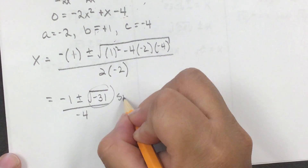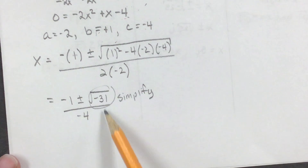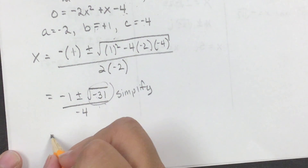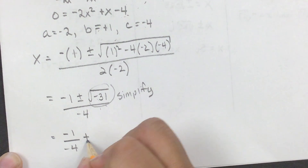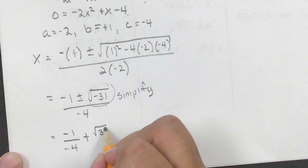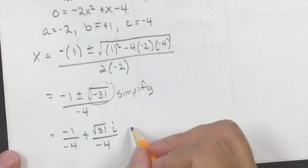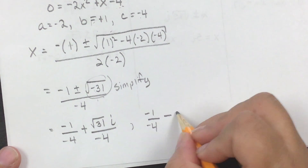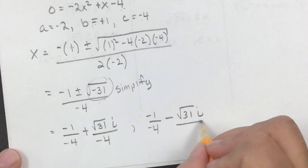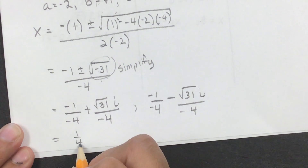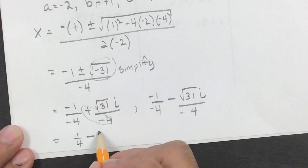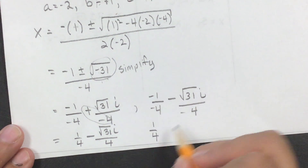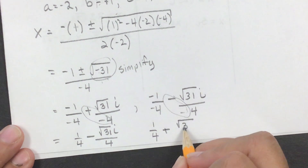We're always trying to simplify the radical. 31 is not divisible by anything else — it's prime — so that means we're just pulling out the i. We have negative 1 divided by negative 4, plus the square root of 31 times i, divided by negative 4. Or the other option: negative 1 divided by negative 4, minus the square root of 31 times i, divided by negative 4. When you simplify: you get 1 half minus the square root of 31i divided by 4, and 1 fourth plus the square root of 31i divided by 4.